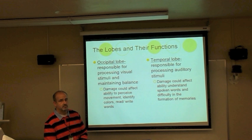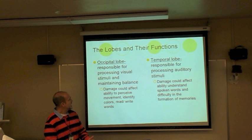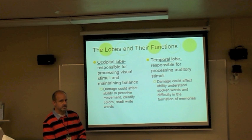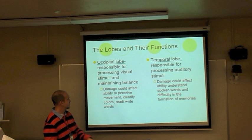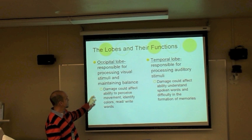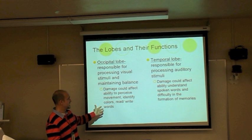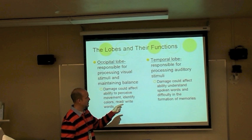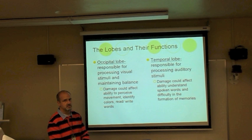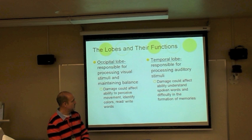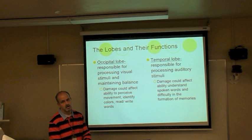The occipital lobe processes visual information and is located at the back of the brain — which is why getting hit in the back of the head causes blurred vision. It also maintains balance, connected with vision. Damage can affect color identification, reading, and movement. A mnemonic: 'oh I can see' or 'doc' — a place where you get eyeglasses. The temporal lobe processes auditory stimulation — remember the tempo of a beat. Damage causes difficulty understanding speech and problems with memory formation, since most memories rely on auditory communication.